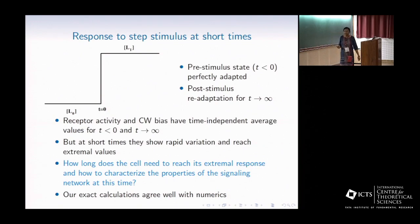As a result, the experimentally measurable quantities like receptor activity or tumbling bias are time independent for these times. But immediately after the stimulus is given, then these quantities, receptor activity or tumbling bias, they show rapid variation with time. They change with time rapidly, they reach some extremal value, and from which they slowly relax to the new steady state.